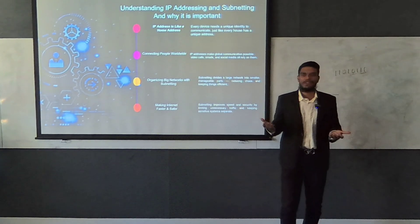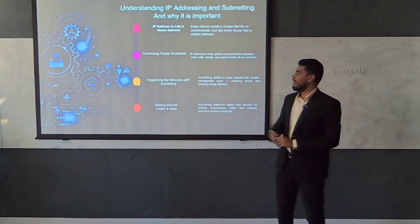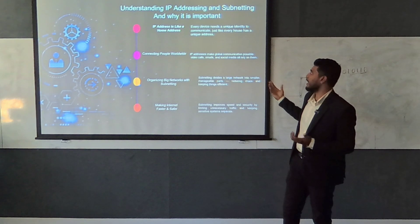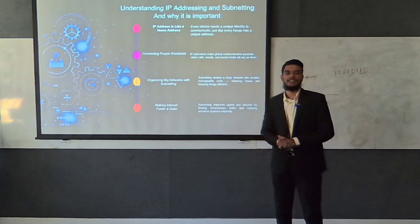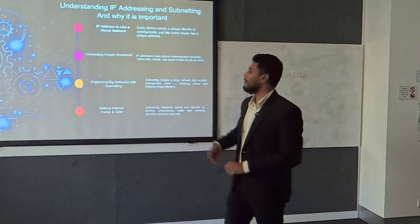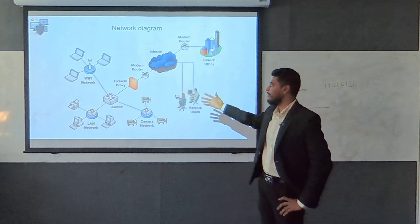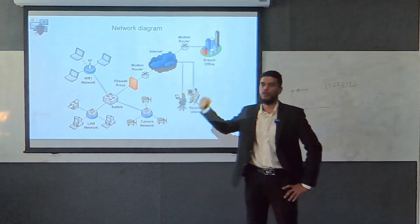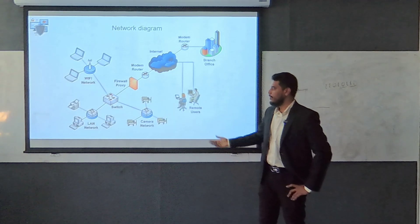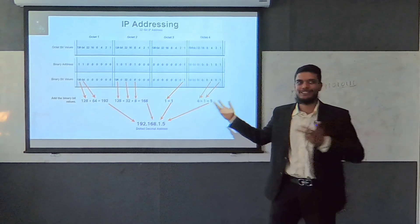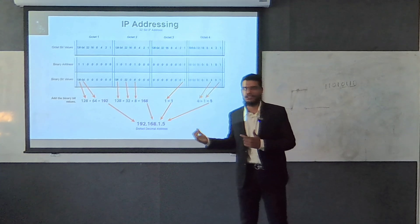There are advantages to understanding IP addressing and subnetting. Every device needs a unique identification for communication, just like every house has a unique address. Subnetting improves speed and security by limiting unnecessary traffic and keeping sensitive systems separate. In the network diagram, we can see many devices connecting to each other. Video, social media — everything relies on IP addresses. IP addresses can seem complicated with all the binary and octal numbers, but that's why we need subnetting to identify the right one.